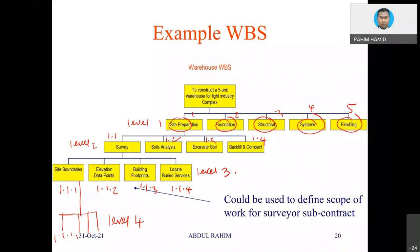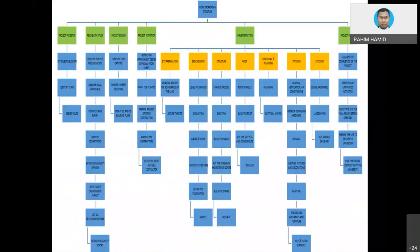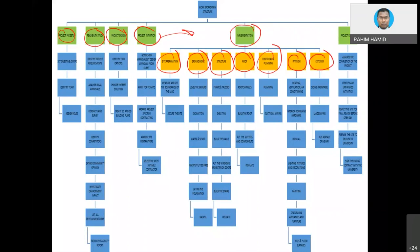It is up to the planner to decide how far to go into detail. Here is another example of WBS starting with project setup, feasibility study, project design, and project initiation, leading to implementation — which is the real construction phase consisting of site preparation, groundwork, structure, roof work, electrical and plumbing, finishing interior and exterior, etc. — and lastly project ending and handover.